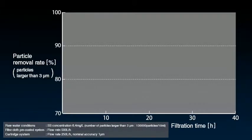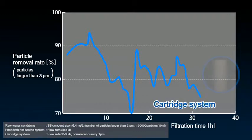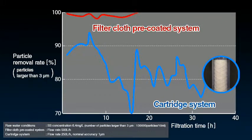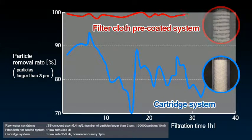If we consider this in numerical terms, we get a better idea of how big this difference is. We plotted the changes in removal rate for particles larger than 3 micrometers over the passage of filtration time in a graph. In comparison to the cartridge system with unstable particle removal rate, we can see that the particle removal rate for the filter cloth pre-coated system is high, and that filtration clarity is stable even as time passes.